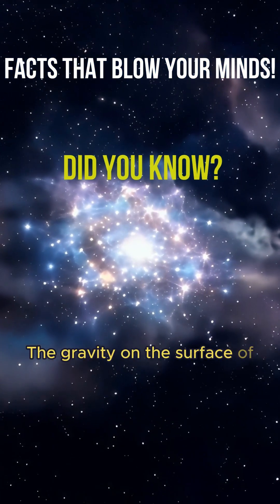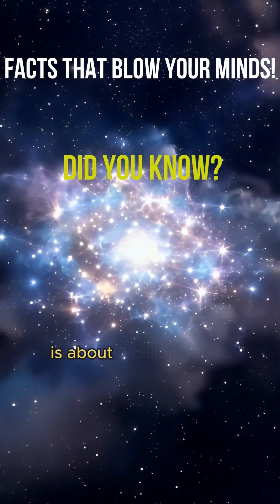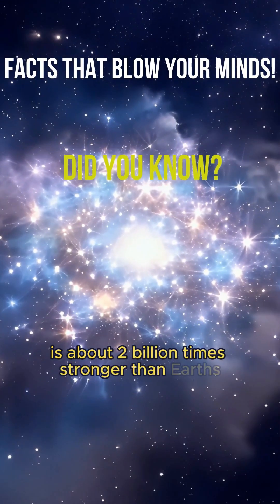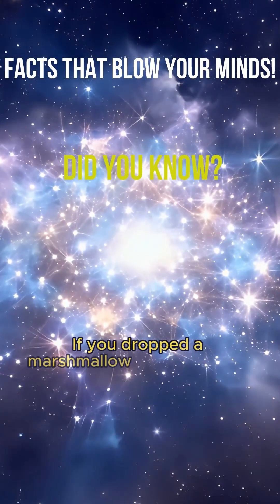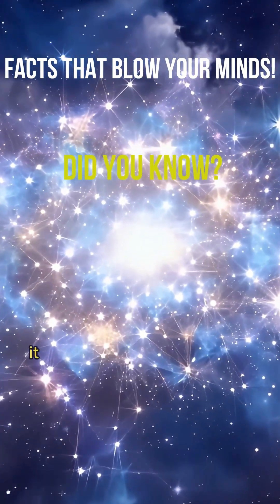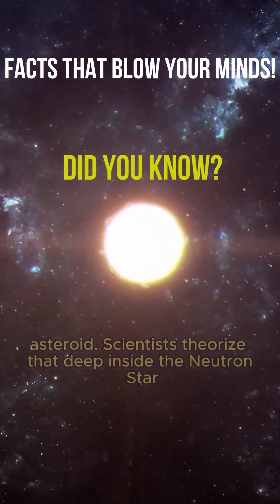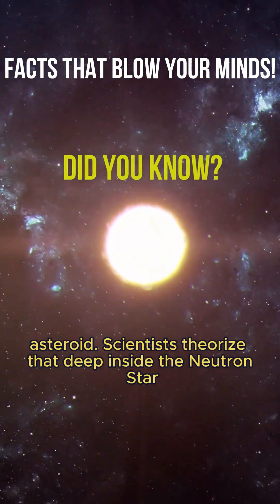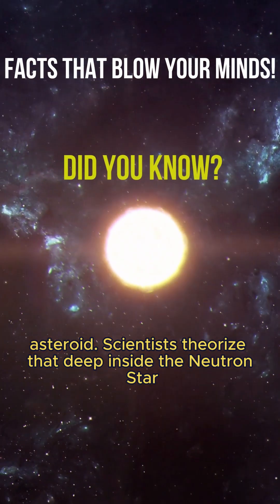The gravity on the surface of a neutron star is about 2 billion times stronger than Earth's. If you dropped a marshmallow onto a neutron star, it would hit the surface with the force of a 3-ton asteroid.